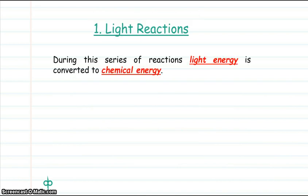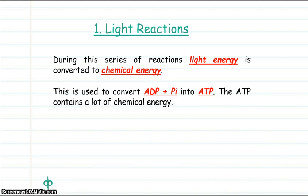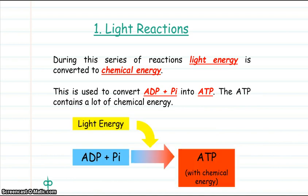In the light reactions, during this series of reactions, light energy is converted to chemical energy, and this is used to convert ADP plus inorganic phosphate into ATP. The ATP contains a lot of chemical energy.